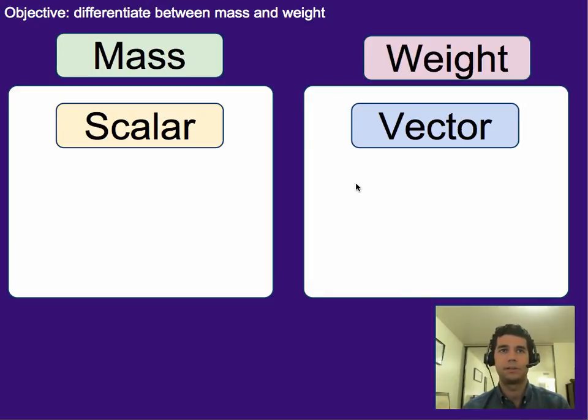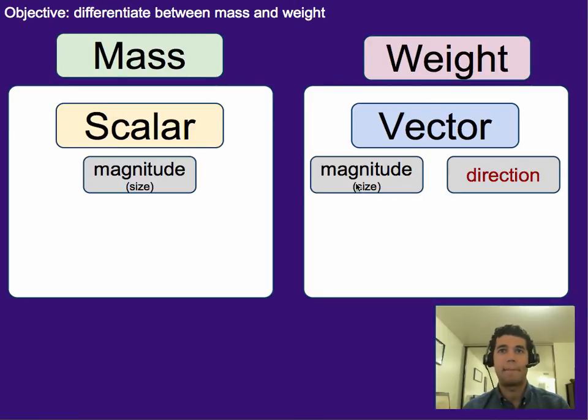So for further comparison, mass is a scalar. It doesn't have a direction. It simply has a magnitude, whereas weight has both a magnitude and a direction. The weight of something is always directed down because gravity always pulls things down, or at least towards the center of the object, which is usually down.